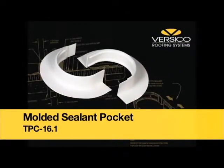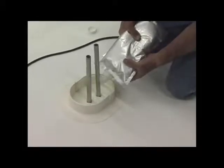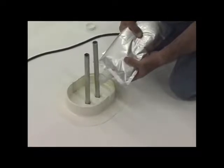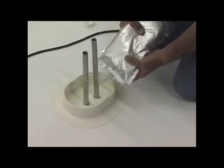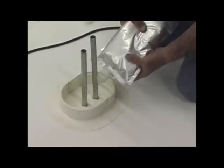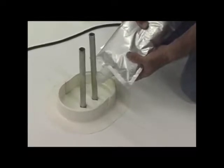The VersaWeld TPO Molded Sealant Pocket consists of an interlocking two-piece flexible pocket with preformed deck flanges. This product is used to waterproof pipe clusters or other oddly shaped penetrations.